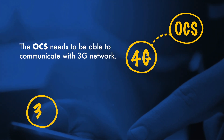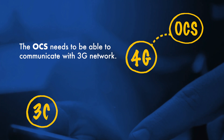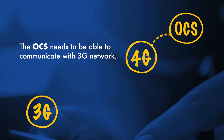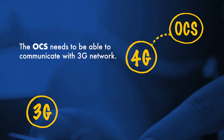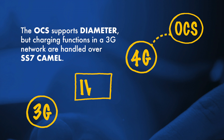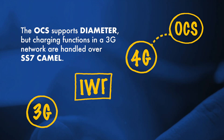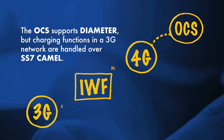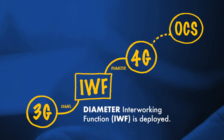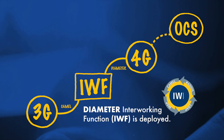When a subscriber roams outside the 4G network into a 3G network, the OCS needs to be able to communicate with this 3G network. The OCS supports the Diameter RO or GY interface, while all charging functions in a 3G network are handled over the legacy SS7 CAMEL protocol. The operator therefore needs to deploy a Diameter interworking function.